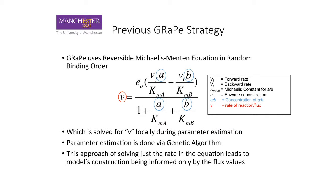The general strategy of the previous GRADE is the use of a reversible Michaelis-Menten equation in random binding order. The example equation shown is for a simple unimolecular to unimolecular reaction, where A and B are the substrates and products — A is the substrate and B is the product — representing the metabolic concentrations. V is the rate of reaction or flux. GRADE builds the model and solves V locally by individual reaction through the method of genetic algorithm.